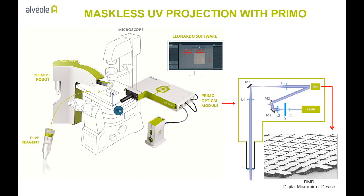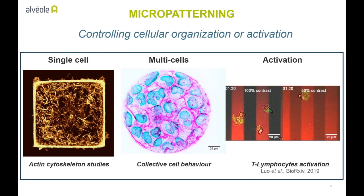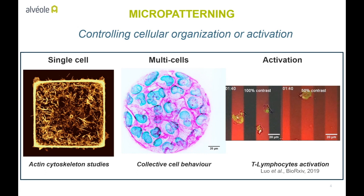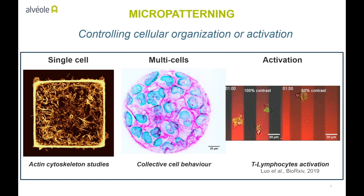This UV light that one can now control is used in combination with specific UV-sensitive chemistries to engineer cellular microenvironments. For instance, it allows for micropatterning of biomolecules into an anti-adhesive background. This is useful to control single cell, as shown on the left, or multicellular arrangement, as shown in the center. This approach can also be used to expose cells to activating molecules.